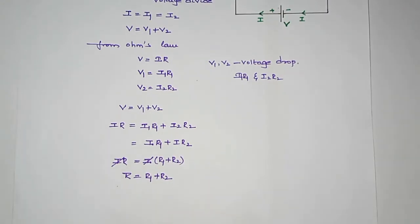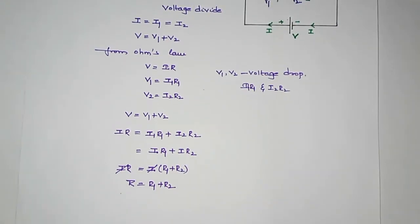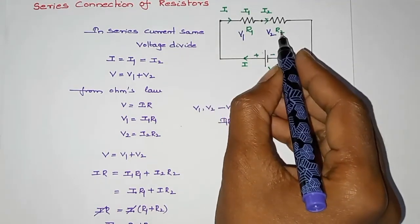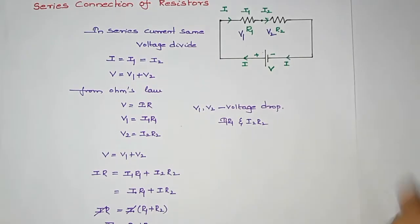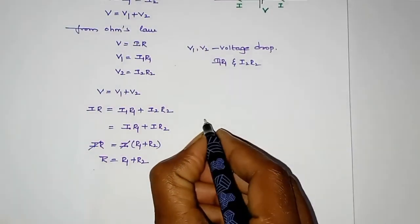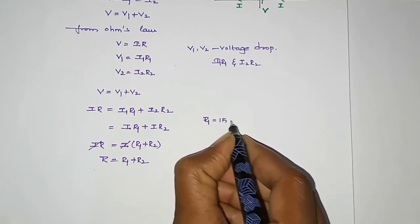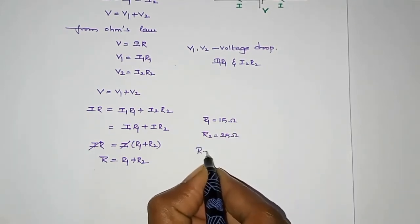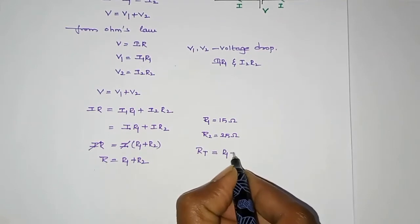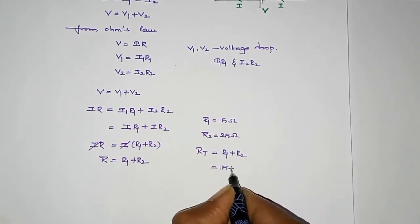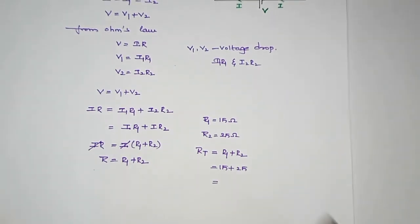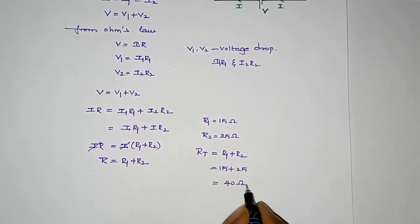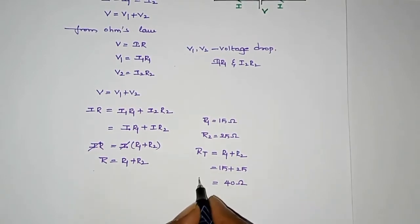We will add the resistance values. R1 equals 15 ohms, R2 equals 25 ohms. Total resistance in series: R1 plus R2 equals 15 plus 25 equals 40 ohms. Total resistance when two resistances are connected in series is 40 ohms.